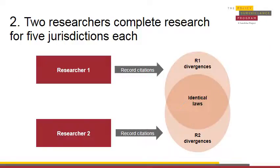Once redundant research has been assigned for a batch of jurisdictions, the two researchers should each independently record relevant citations on a master sheet so that they can be compared. For more information on master sheets, please visit Module 4, Collecting the Law.